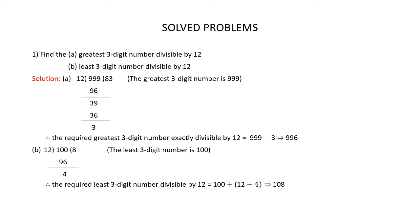Since you are asked to find the least 3-digit number exactly divisible by 12, the required least 3-digit number exactly divisible by 12 is equal to the least 3-digit number plus divisor minus remainder. That is 100 plus 12 minus 4. 12 minus 4 is 8, and 100 plus 8 is 108. And 108 is completely divisible by 12, so 108 is the least 3-digit number exactly divisible by 12.